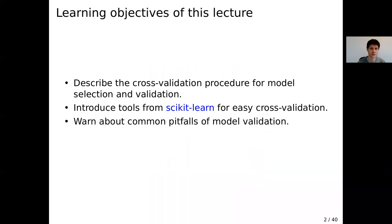Our objectives for this lecture will be to describe the cross-validation procedure for selecting machine learning models and validating them, evaluating their performance, to introduce tools from scikit-learn to easily perform this cross-validation procedure, and to warn about common pitfalls — easy mistakes in the implementation of cross-validation that can result in incorrect estimates of how well our model will perform on unseen examples. Along the way we will review some notions from the previous lecture: supervised learning, regularization, and dimensionality reduction.